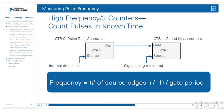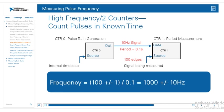Let's take an example. If counter zero outputs a pulse train of 10 Hz, the gate period is 0.1 seconds. If during that time we count 100 source edges, we know the source frequency on counter one is going to be 100 divided by 0.1 — the gate period — which gives us 1000 plus or minus 10 Hz.